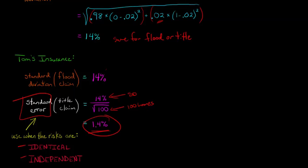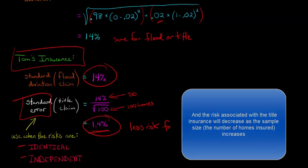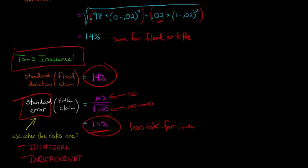1.4% is a lot lower than 14%, so there's going to be less risk with the title insurance than there is with the flood from the perspective of the insurance company. This is the value of diversification. The idea is that all the independent risks kind of cancel out.